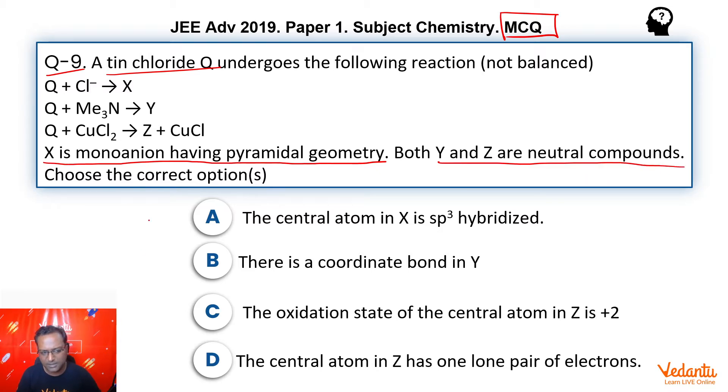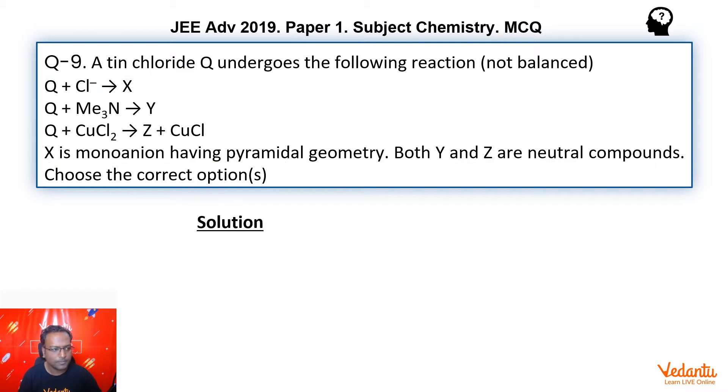Let's solve the question and then we will come back to the options. Now, if we talk about tin chloride, there are two possibilities: SnCl₂ and SnCl₄, with oxidation states of +2 and +4.